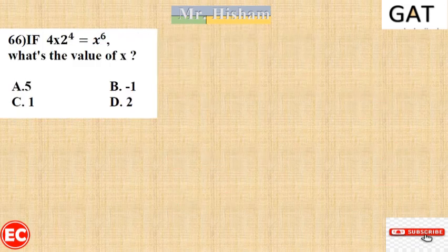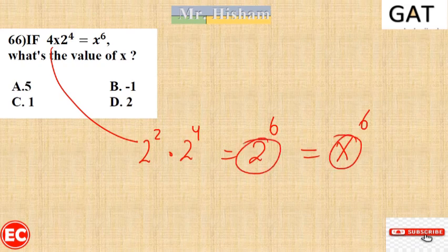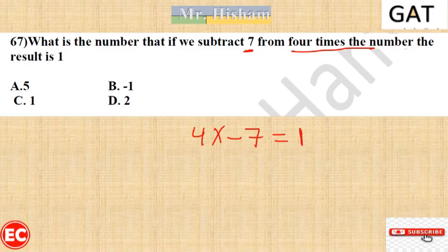Question 66: The answer involves 4 times 8. Setting up 4x equals 8 after adding 7 to both sides, x equals 2.